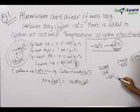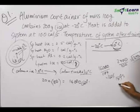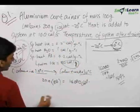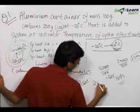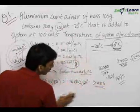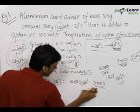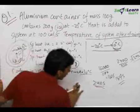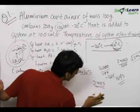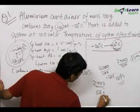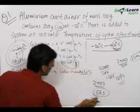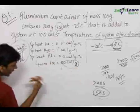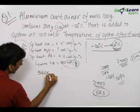The time taken is 16000 divided by 100, equal to 160 seconds. So we are done with 184 seconds now. The total time is 4 minutes, equal to 240 seconds. The amount of time left for further heating is 240 minus 184, equal to 56 seconds. So in 56 seconds, the amount of heat we will give is 5600 calories.